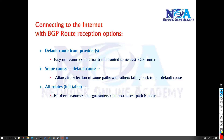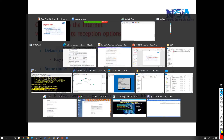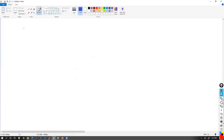Next we'll try to understand the BGP route options — how we are going to connect to the internet, what the route exchange will look like, and in which scenarios we exchange complete routes versus when we don't. There are three different options, three different ways to inject the routes. Let's look at the first option now.